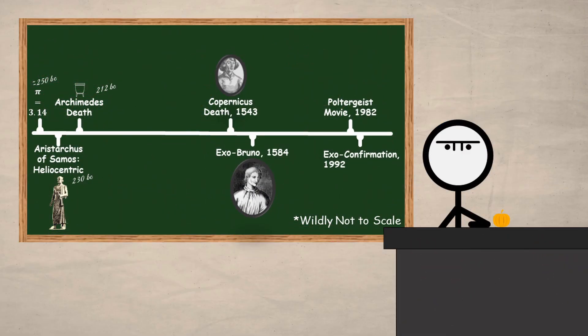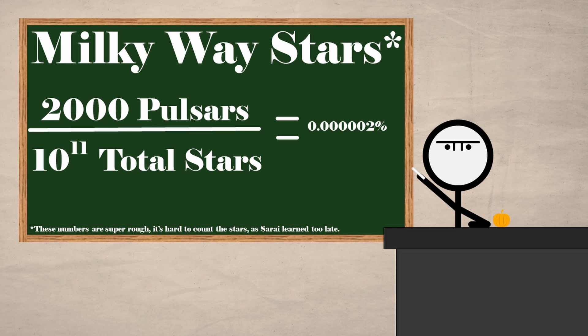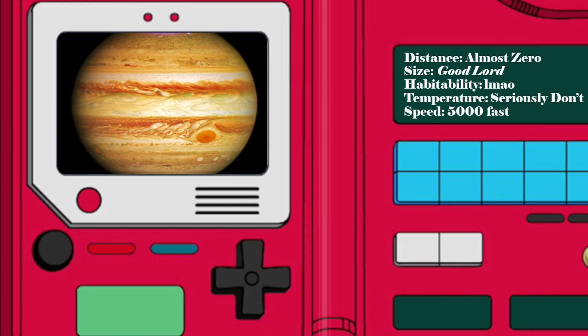For 14 years since first sensing Poltergeist in 1988, pulsar timing and the wobble method were our only real options for exploring exoplanets. But because pulsars are so ridiculously rare, we basically just worked with wobbling. Because of this, we had way more hot Jupiters in our planet decks than any other kind of exoplanet.